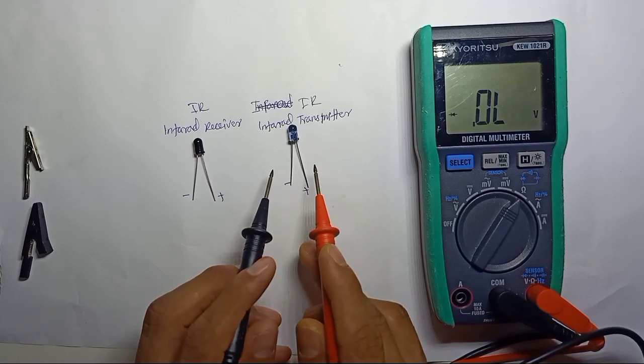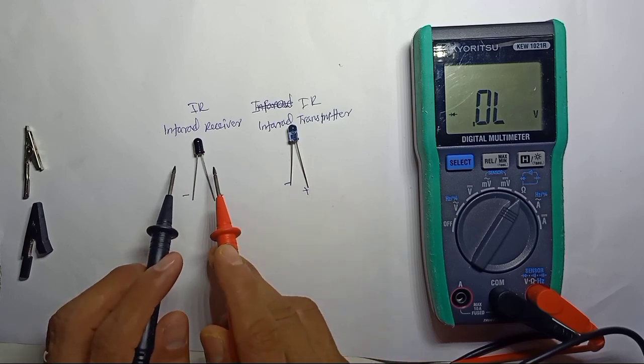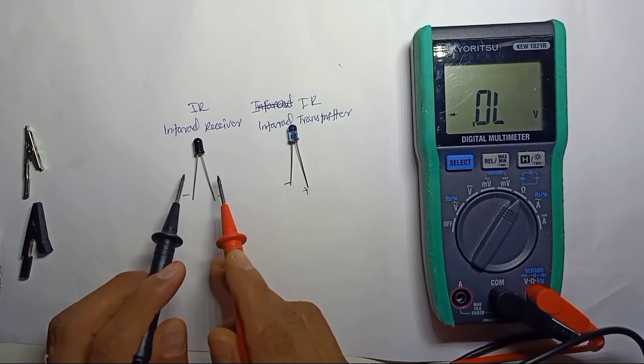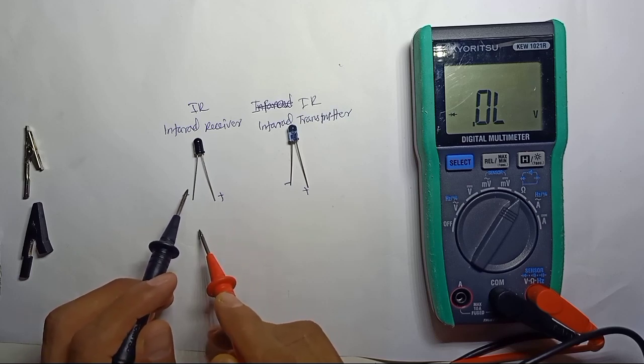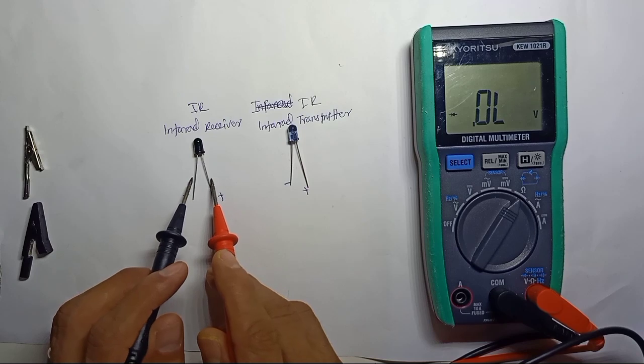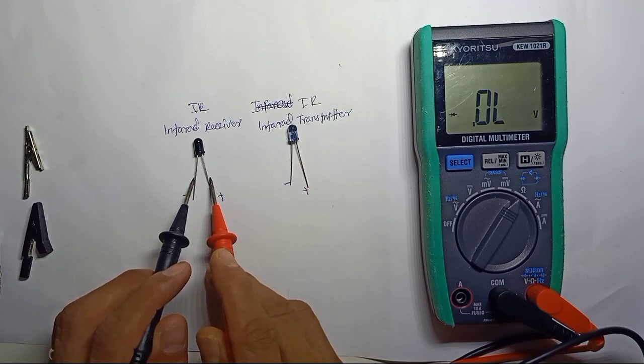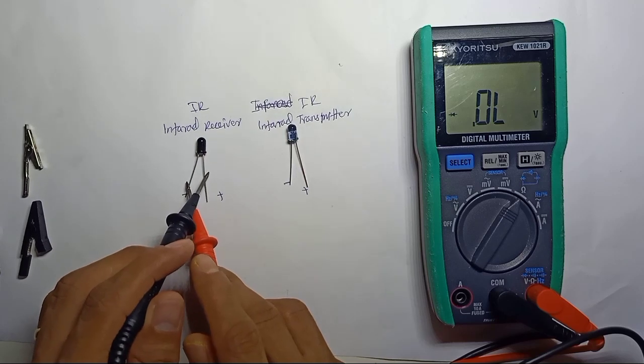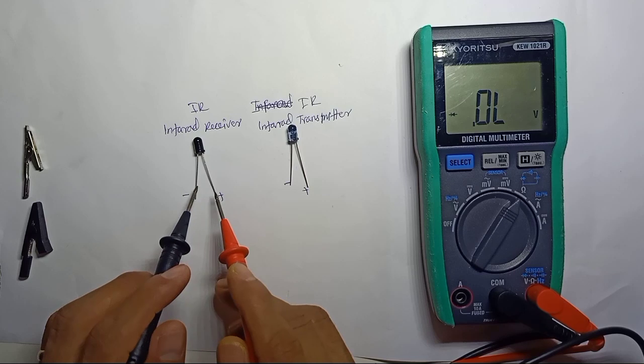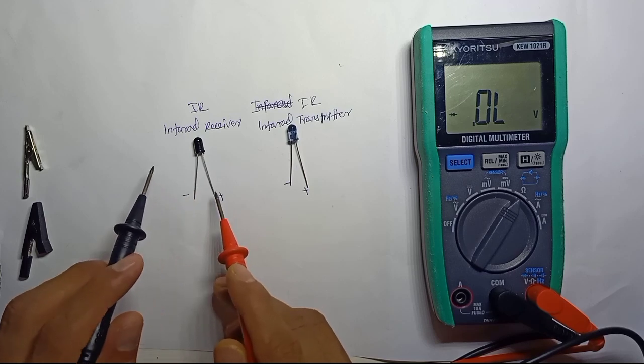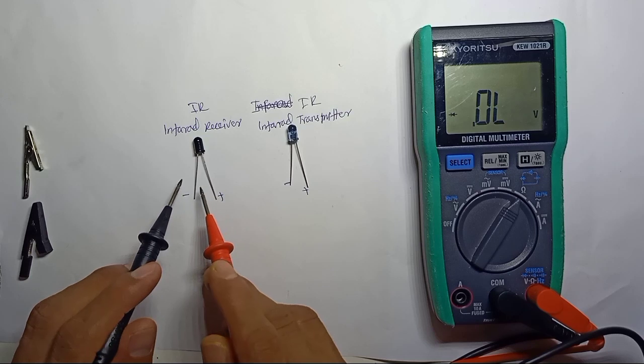If we check the infrared receiver, the longer pin is positive and the shorter pin is negative. Just like the transmitter, if you test you won't get any voltage drop. If you reverse, you will not get any voltage drop either. The working method is different.